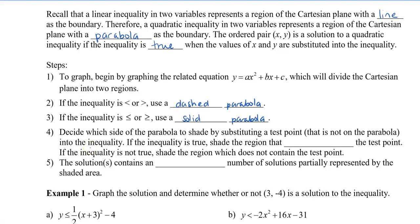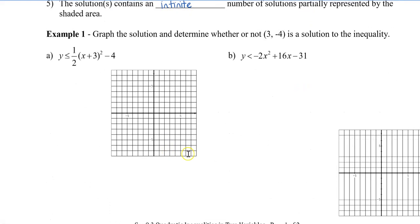Similar to graphing a linear inequality in two variables, we decide which side of the parabola to shade by substituting a test point. Make sure you choose a point that's not on the parabola. If the inequality is true, you're going to shade the region that contains that test point. If the inequality is not true, then you're going to shade the region which does not contain the test point. Remember that the solutions to an inequality with two variables contains an infinite number of solutions, partially represented by the shaded area.